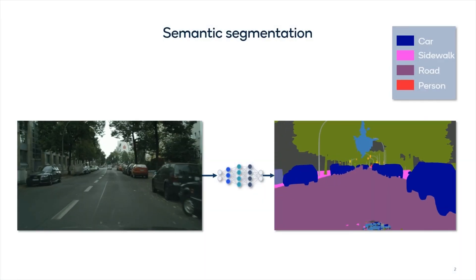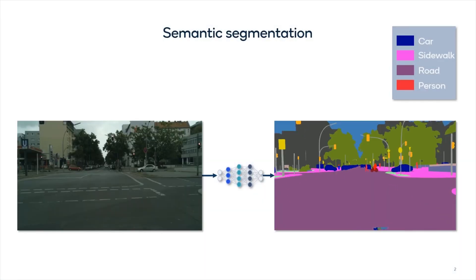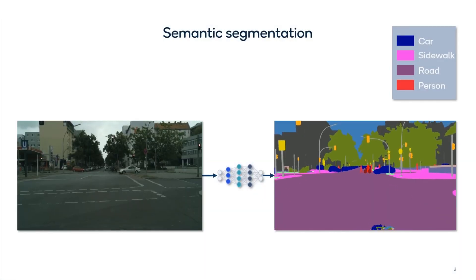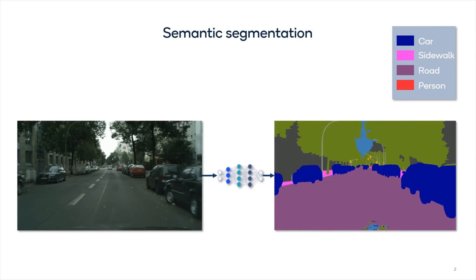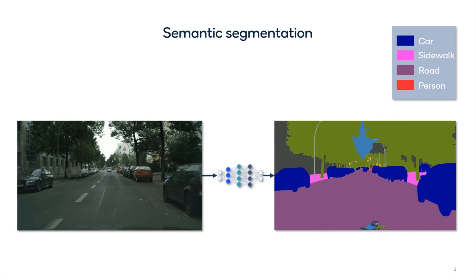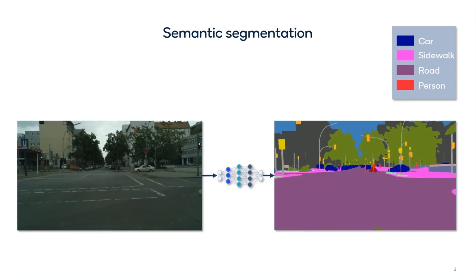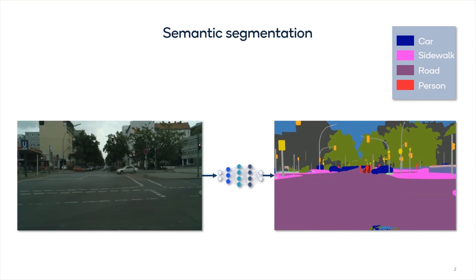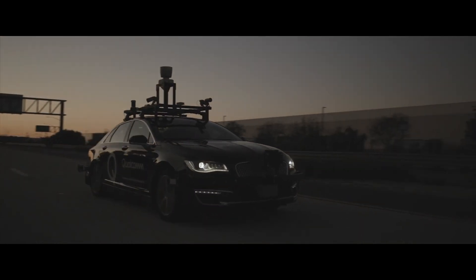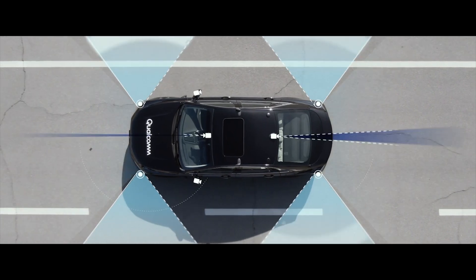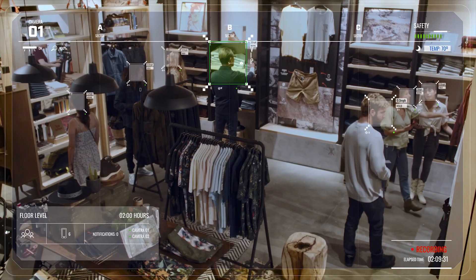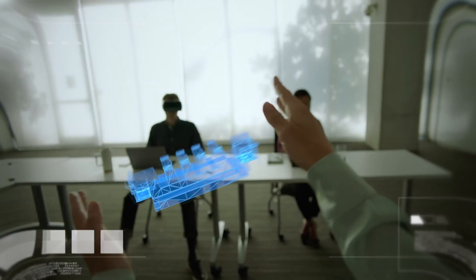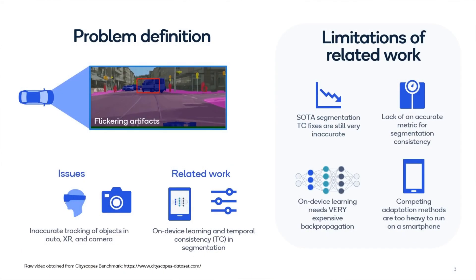Semantic segmentation is a popular computer vision task that assigns every pixel of an image to a label. It enables many emerging use cases, including autonomous driving, smart cameras, and XR applications.